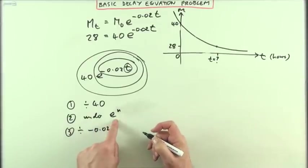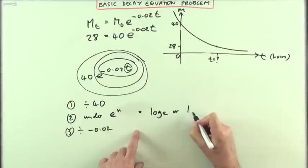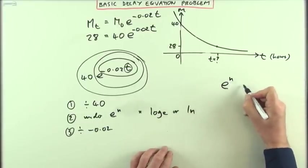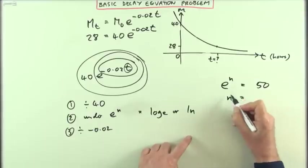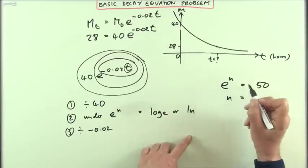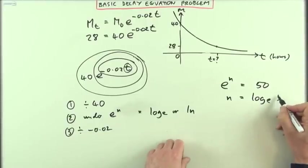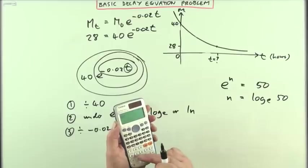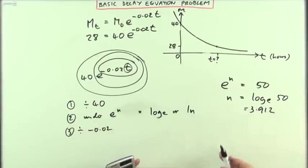So back to here then. Undo e to the n will mean doing log base e or if you like log base n written the other way. An example being if e to some power gave me, I might not use the same 50, how could I get what n was? Undo the exponential. Inverse is log base e. Either log e or ln. Log e 50, which is just the ln button, ln 50. And that would be 3.912. So e to the power of 3.912 should give me 50.